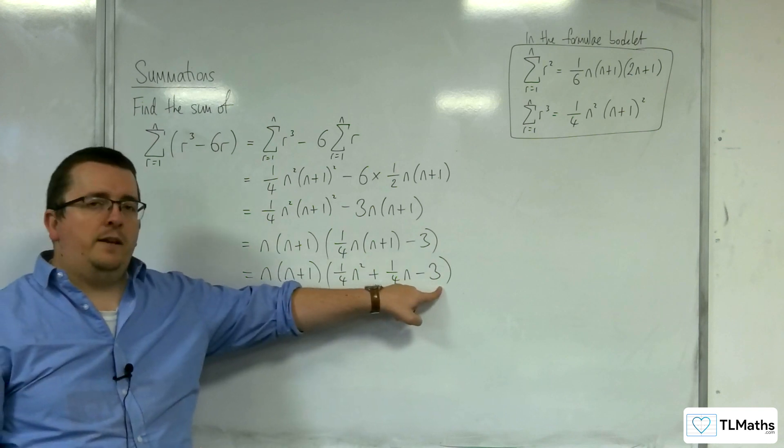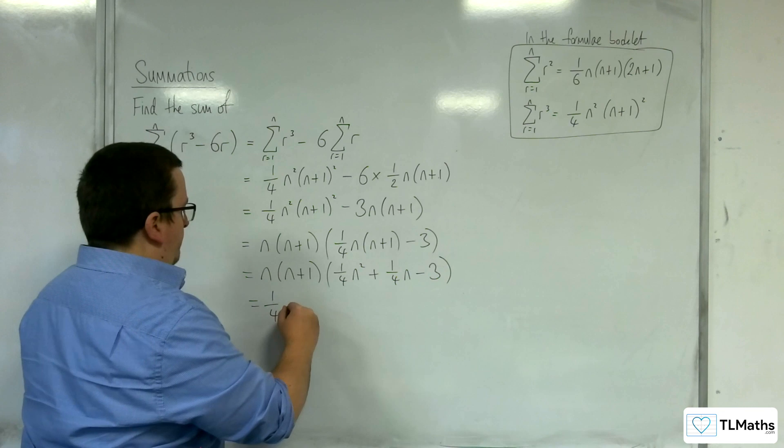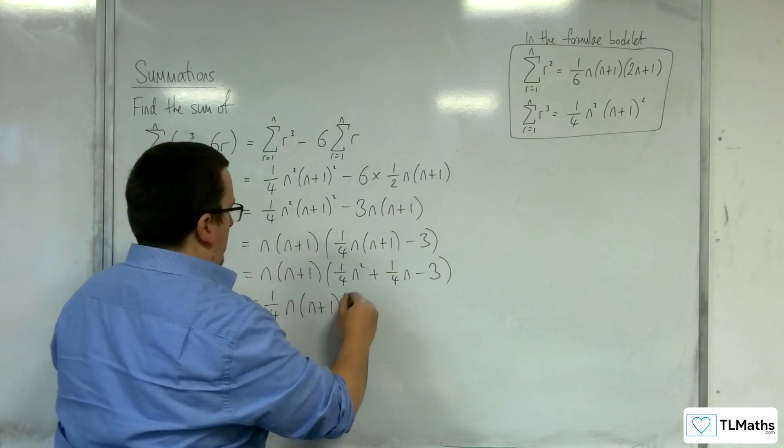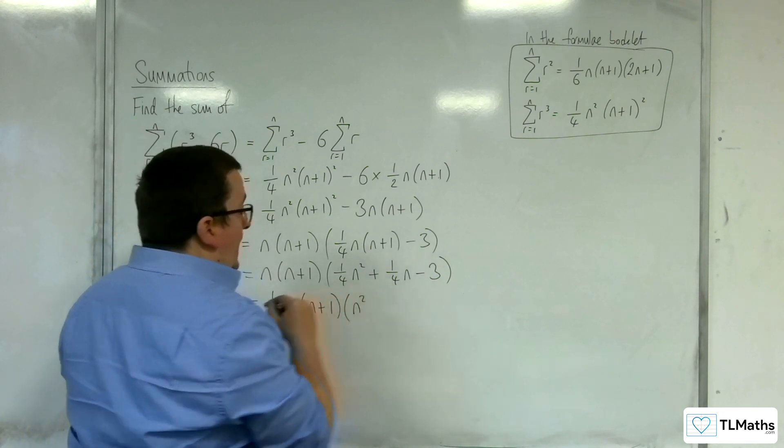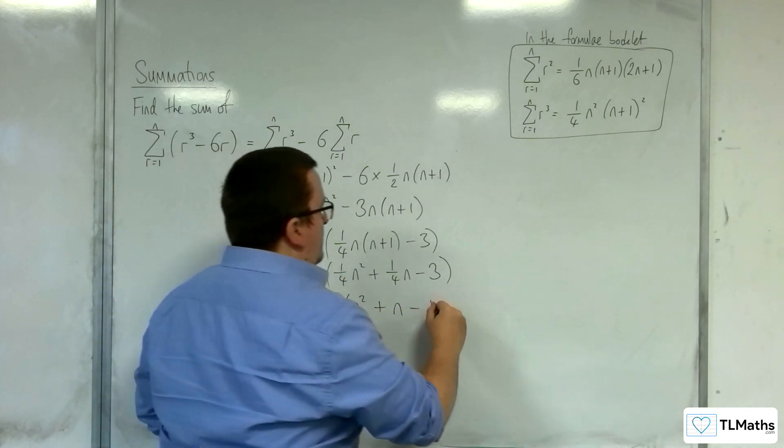So I'm going to factor 1 quarter out from that bracket, leaving me with n squared plus n, and we would have to have take away 12 here.